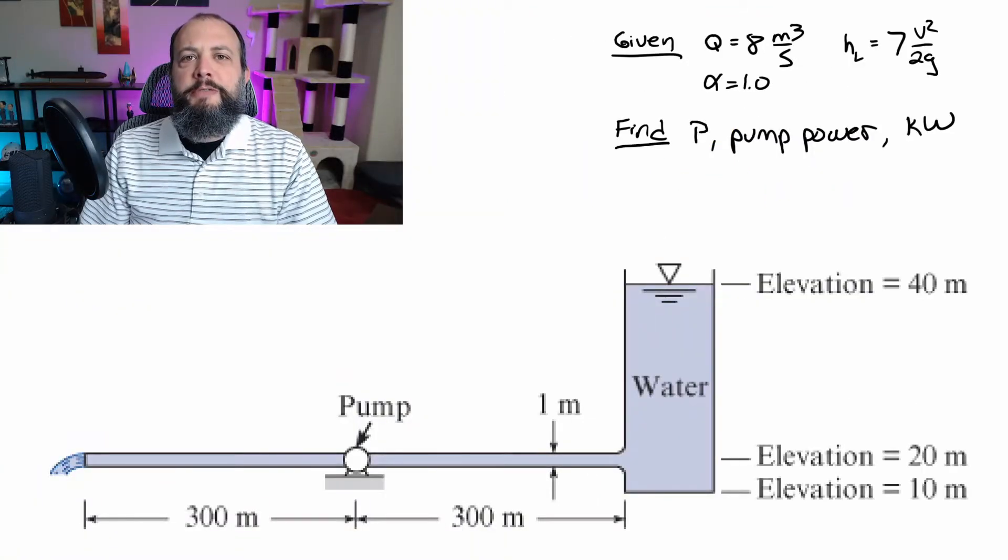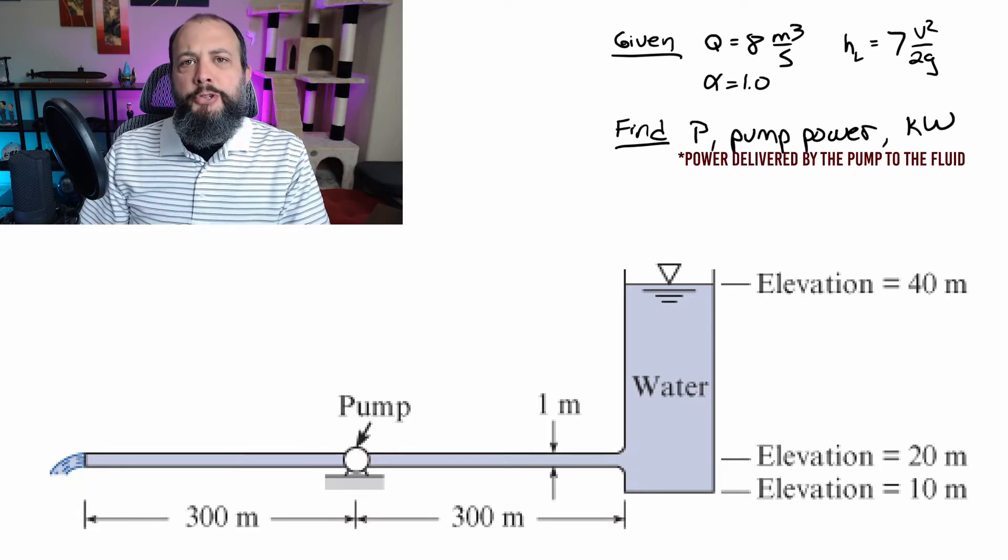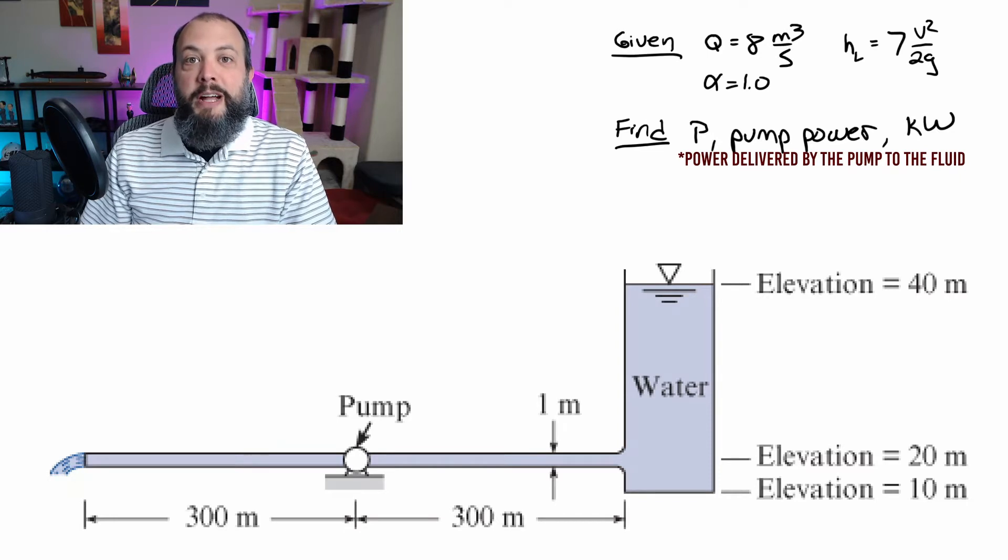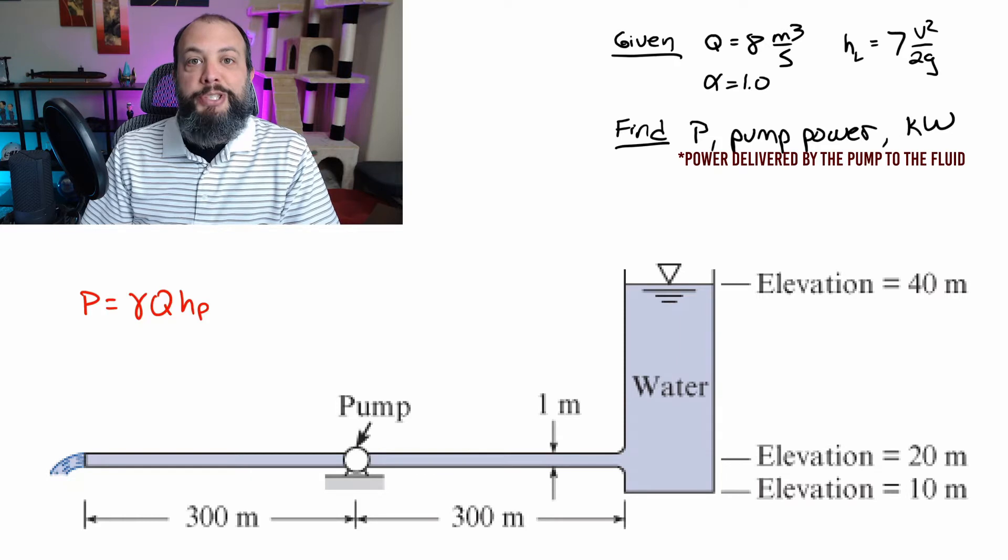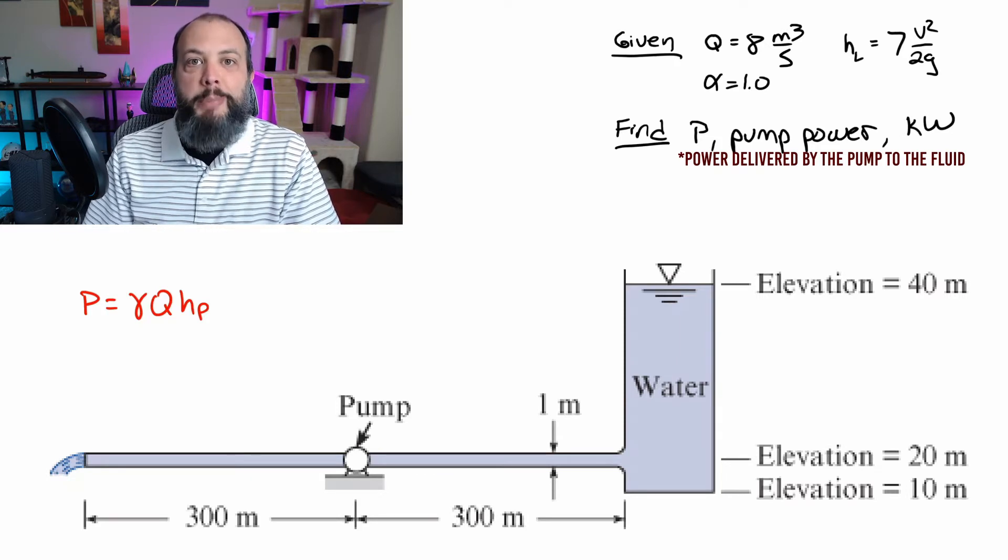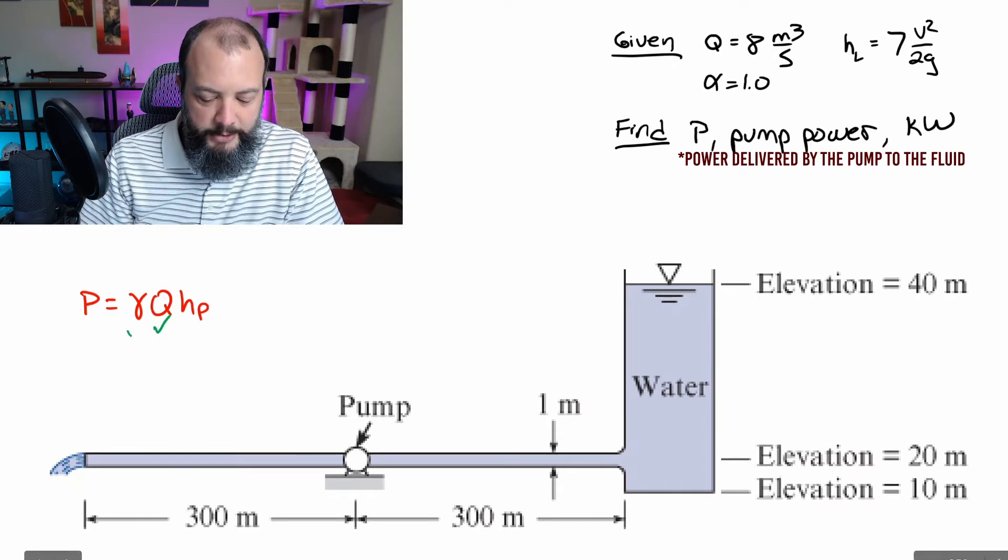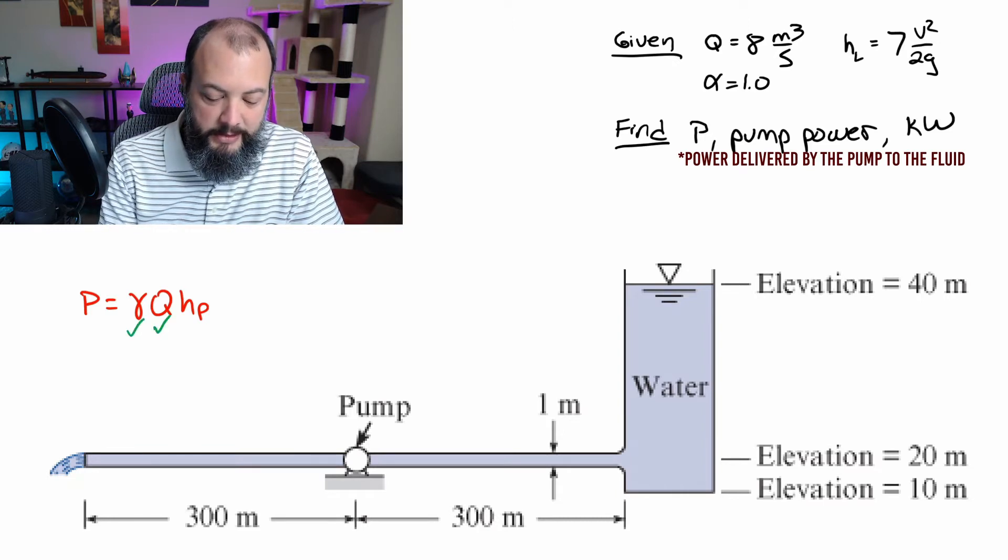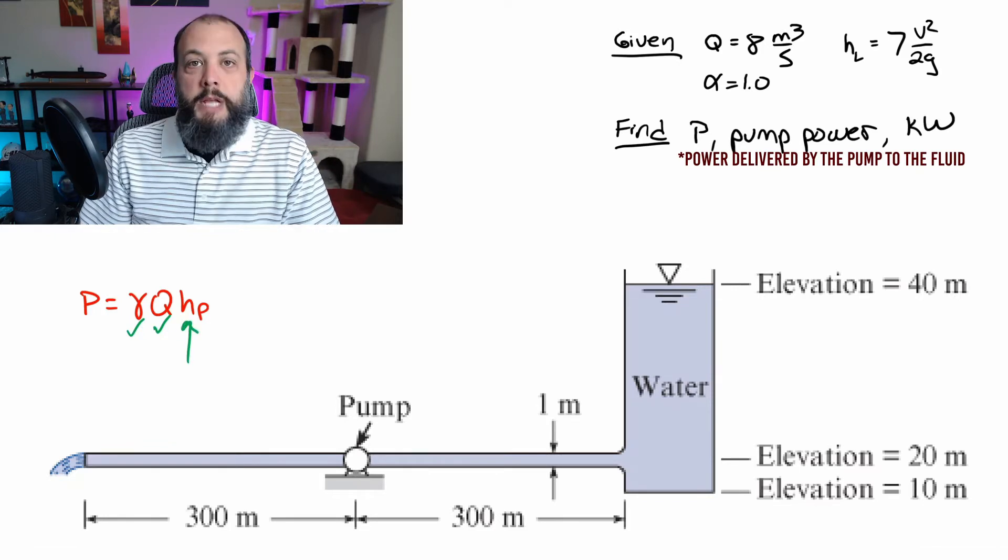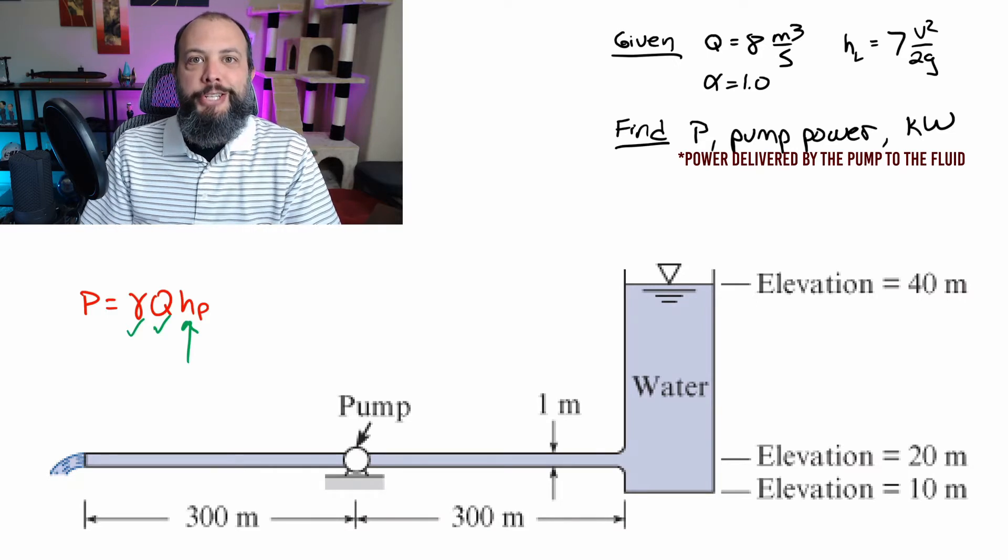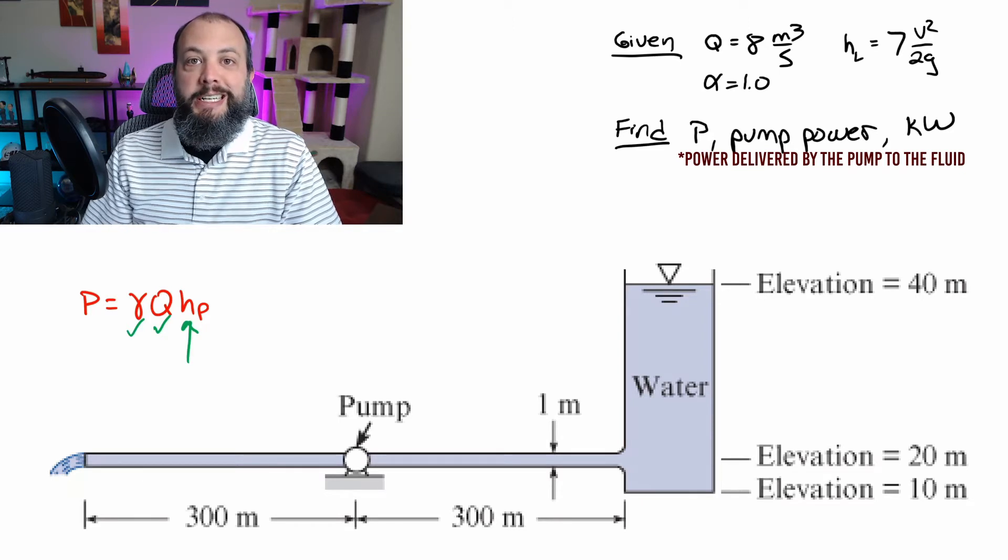So taking a look at this problem, let's first figure out how we would know that this could be solved with an energy equation. And the first way to recognize that is probably by looking at the final answer rest to find, which is pump power. So the equation for pump power is going to be specific weight of the fluid times the flow rate times pump head. And we were given flow rate in this problem, and we can assume a value for the specific weight. And so that just leaves finding the pump head added by the pump to the system. And if we can find that, then we can get power. And the equation that we have that includes pump head in it is the energy equation.